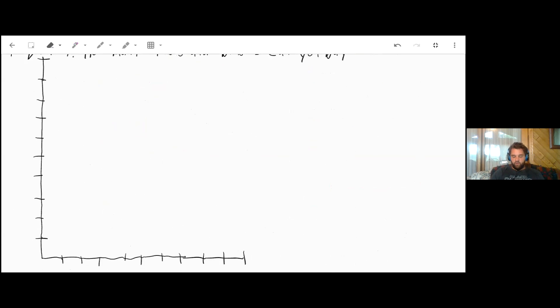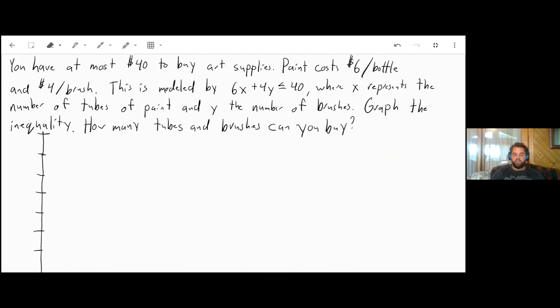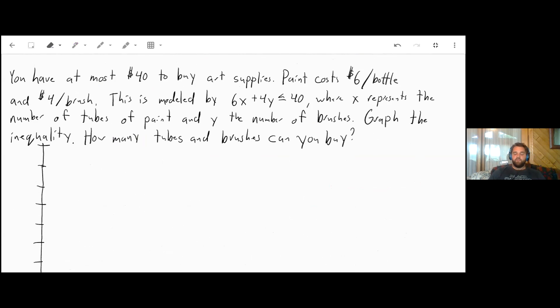Let's try one more inequality. You have at most $40 to buy art supplies. Paint costs $6 per bottle and $4 per brush. This can be modeled by 6x + 4y ≤ 40, where x represents the number of tubes of paint and y equals the number of brushes. Graph the inequality. How many tubes and brushes can you buy?